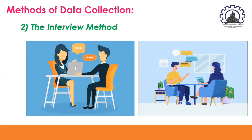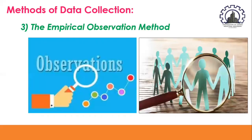Another method of data collection is the empirical observation method. Observation as a means of gathering information for research may be defined as perceiving data through the use of our senses — the sense of sight, hearing, taste, touch, and smell. The sense of sight is the most important and most used among all senses. Observation is the most direct way and the most widely used in studying behavior.